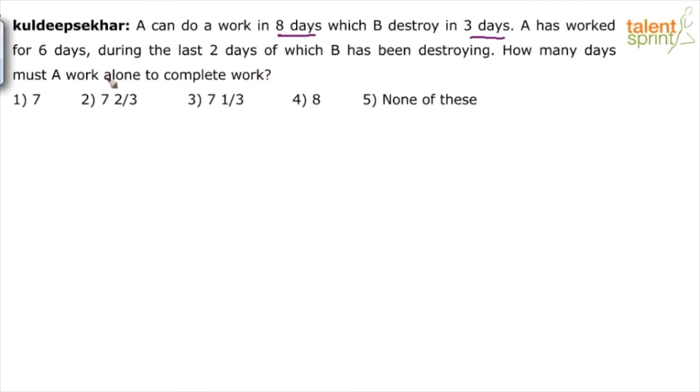You know that A's capacity is 1 by 8, and B's capacity is minus 1 by 3. Remember B is doing negative work, so you have to take negative capacity. So A's capacity is plus 1 by 8 and B is minus 1 by 3 because total time taken is 3 days. So 1 day's work is 1 by 3, here 1 day's work is 1 by 8 and that is what is called capacity.